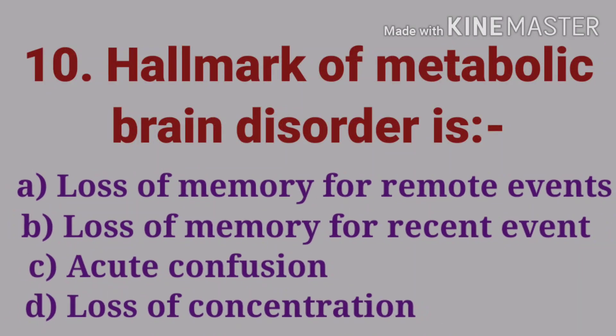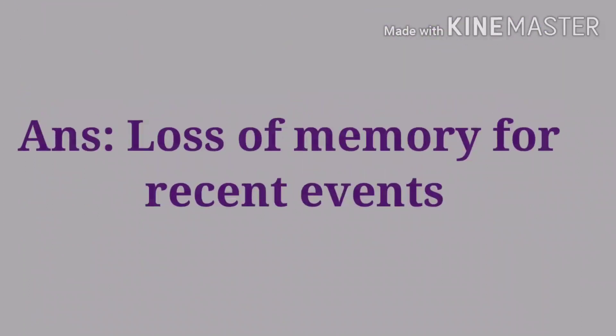The tenth question: hallmark of metabolic brain disorder — options are loss of memory for remote events, loss of memory for recent events, acute confusion, and loss of concentration. The answer is loss of memory for recent events. The hallmark of metabolic brain disorder is loss of memory for recent events.